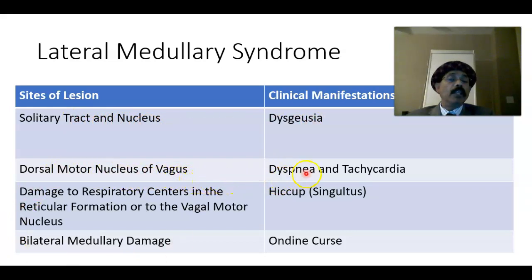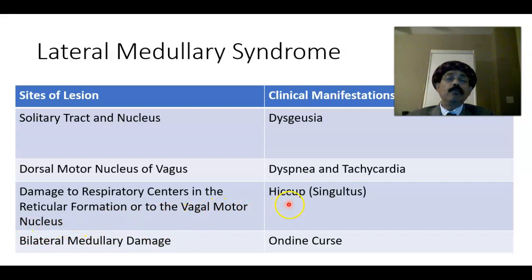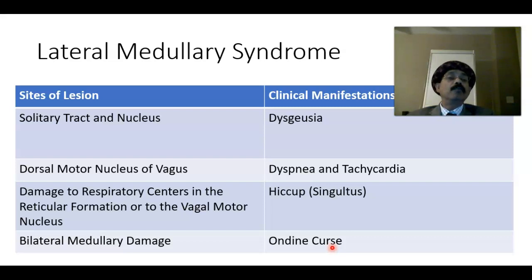The dorsal motor nucleus of the vagus may be involved, leading to dyspnea — difficulty breathing — and tachycardia, increased heart rate. Damage to the respiratory center in the reticular formation — a network of nerves throughout the brainstem, including midbrain, pons, and medulla oblongata, extending to the cerebrum and spinal cord — or damage to the vagal motor nucleus, leads to hiccups, also called singultus. A devastating condition called Ondine's curse can occur with bilateral medullary damage: the person cannot breathe spontaneously and can only breathe when consciously thinking about it.